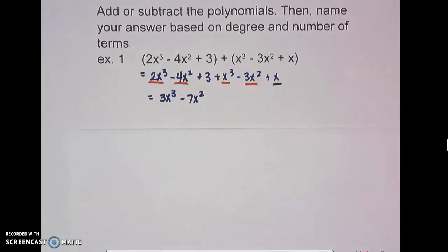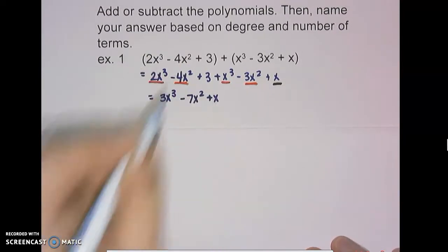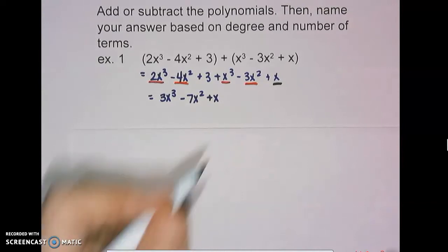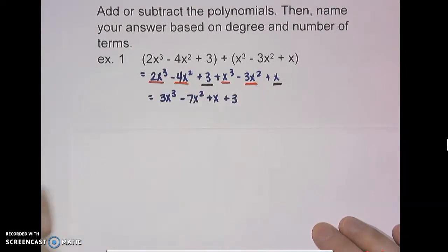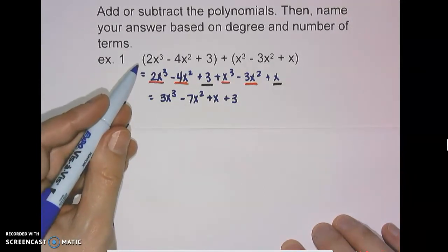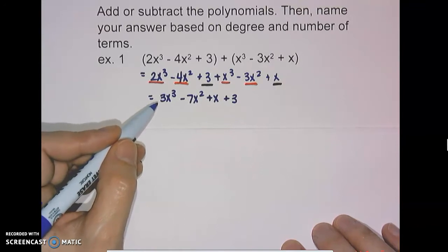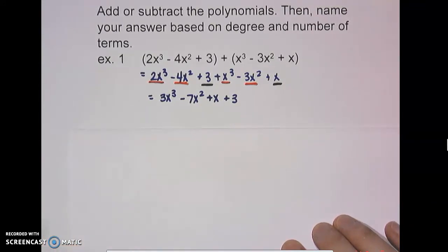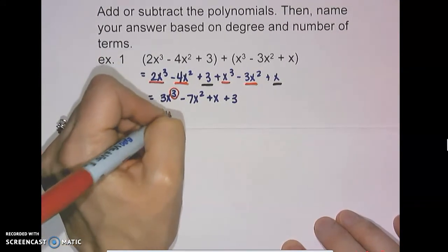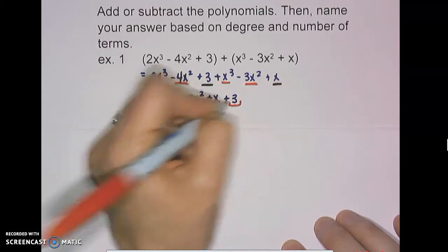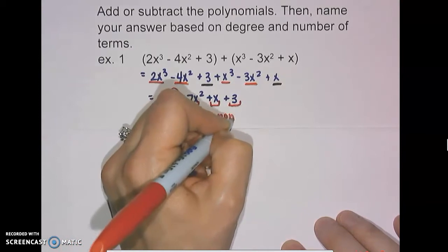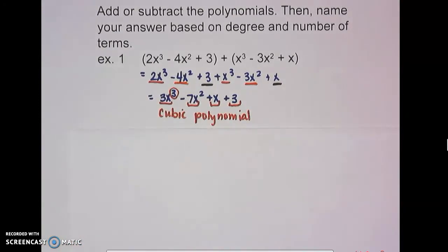The x term doesn't have anything to combine with, so we put plus x. And last, the 3 has no variable with it, so that would be plus 3. So our answer to this addition question is 3x cubed minus 7x squared plus x plus 3. Now we have to name this: the highest exponent is 3, so this is cubic. We have 4 terms, which means this is a cubic polynomial.